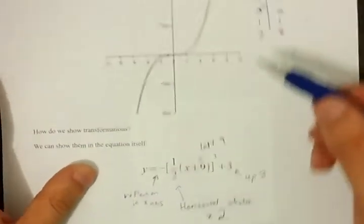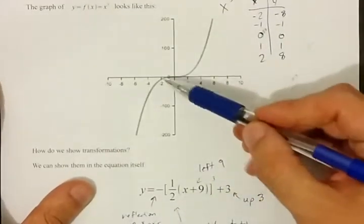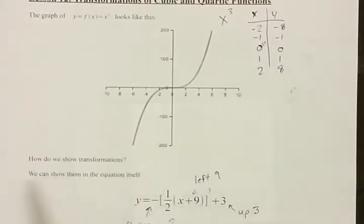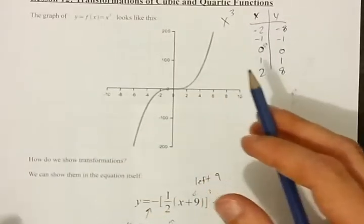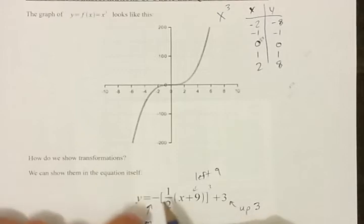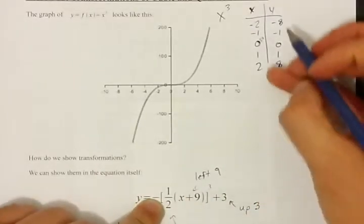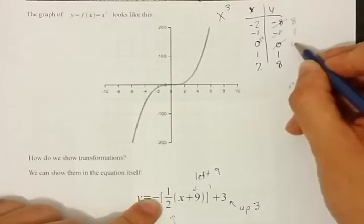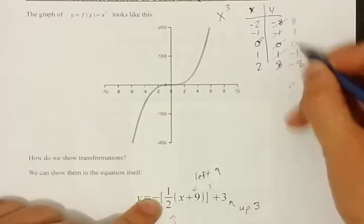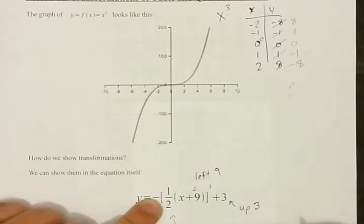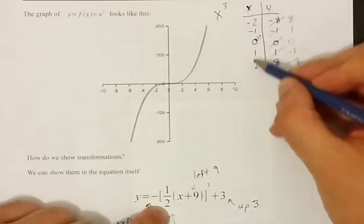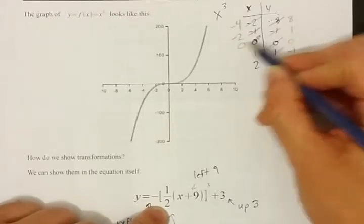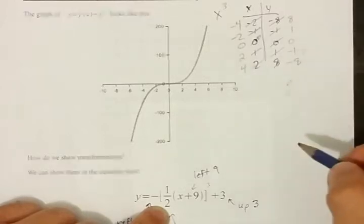How would you apply these transformations? You could do them to each point on the graph, or you can do it to the points in the table of values — that's my personal preference. I'm going to start with my negative. A reflection in the x-axis flips the signs on all my y's, so negative 8 becomes positive 8, negative 1 becomes positive 1, 0 stays 0, 1 becomes negative 1, and 8 becomes negative 8. I've now flipped my function. My horizontal stretch of 2 means all my x's double: negative 2 becomes negative 4, negative 1 becomes negative 2, 0 stays 0, 1 becomes 2, and 2 becomes 4.